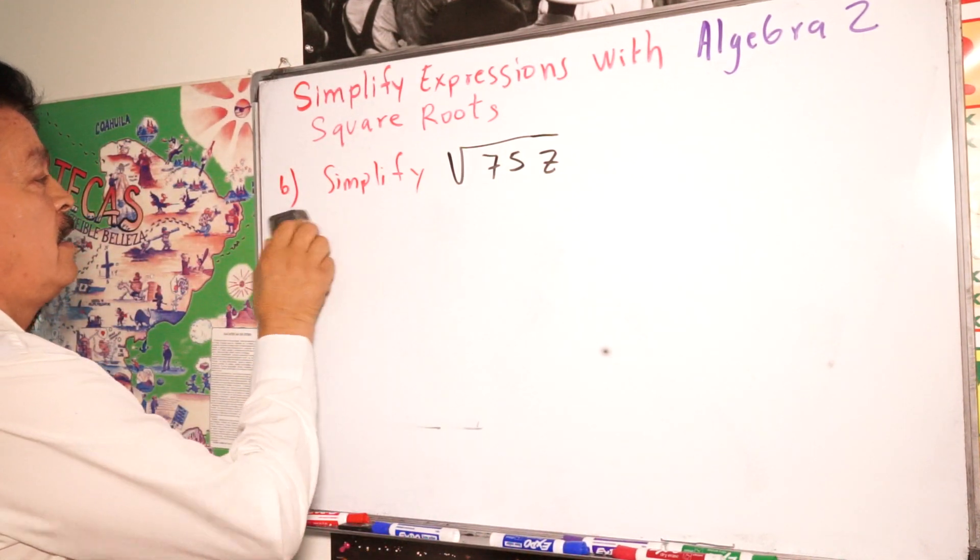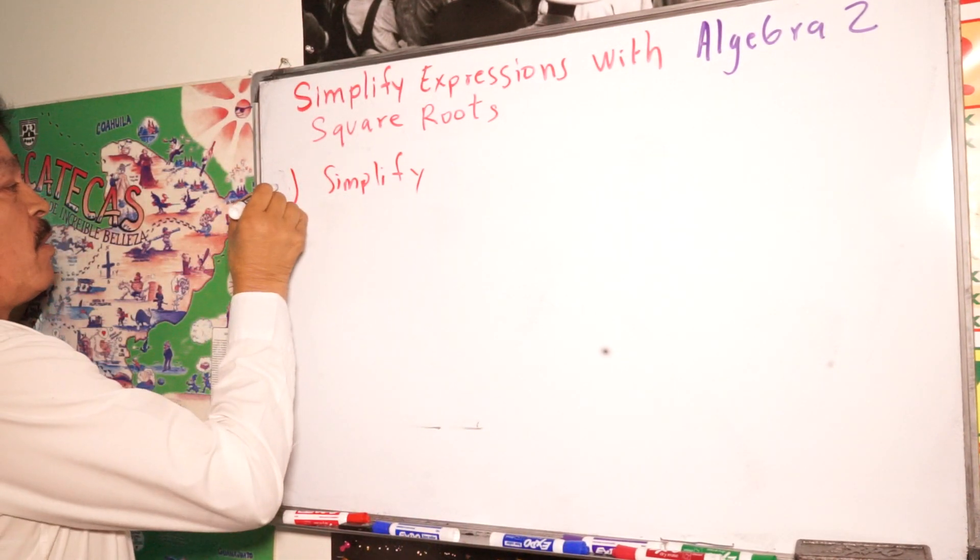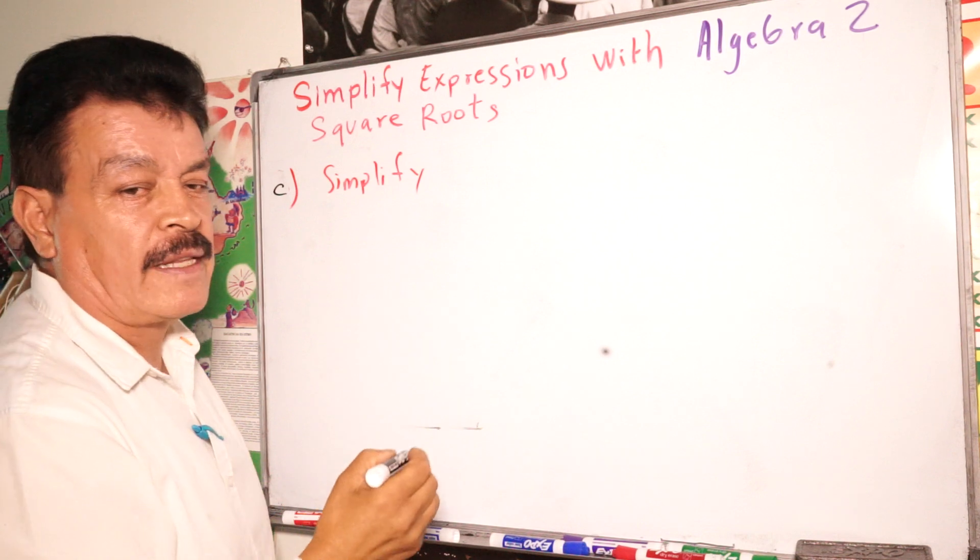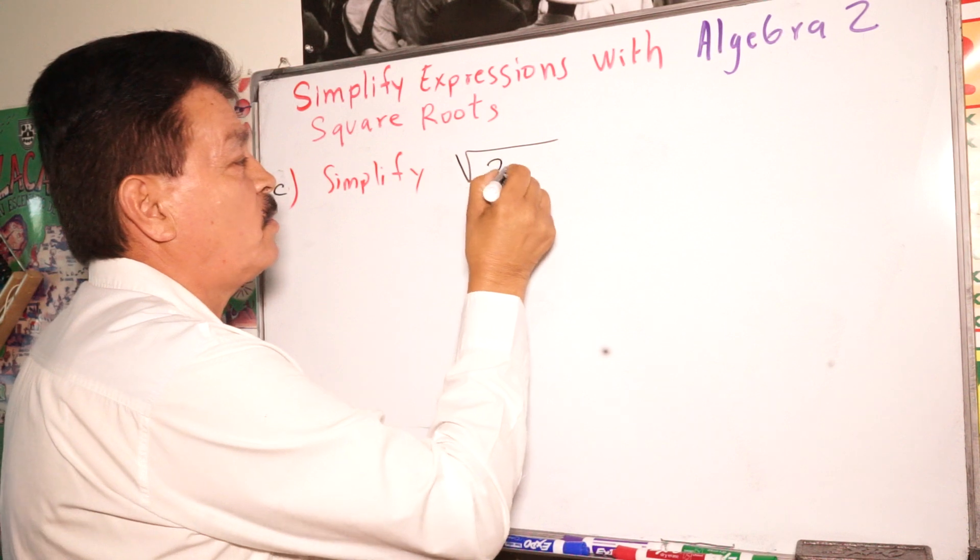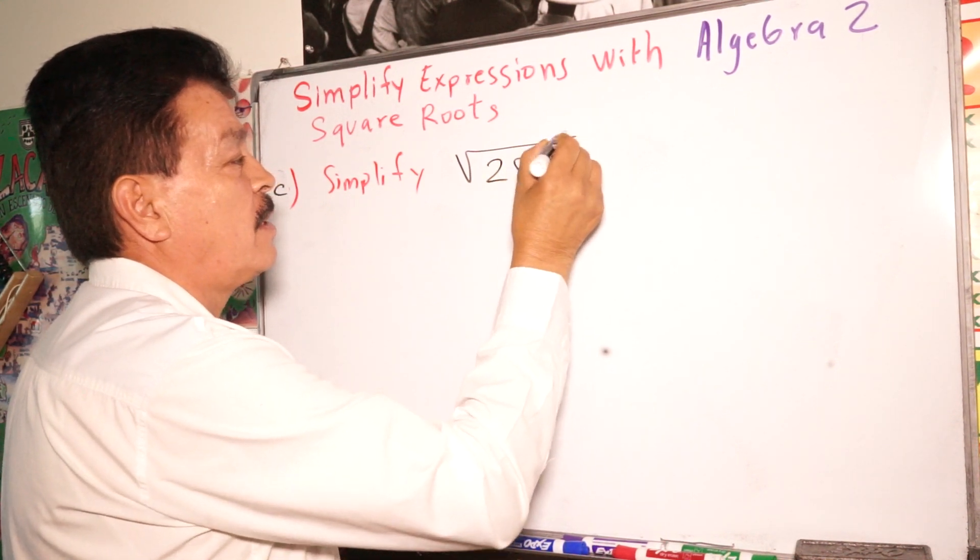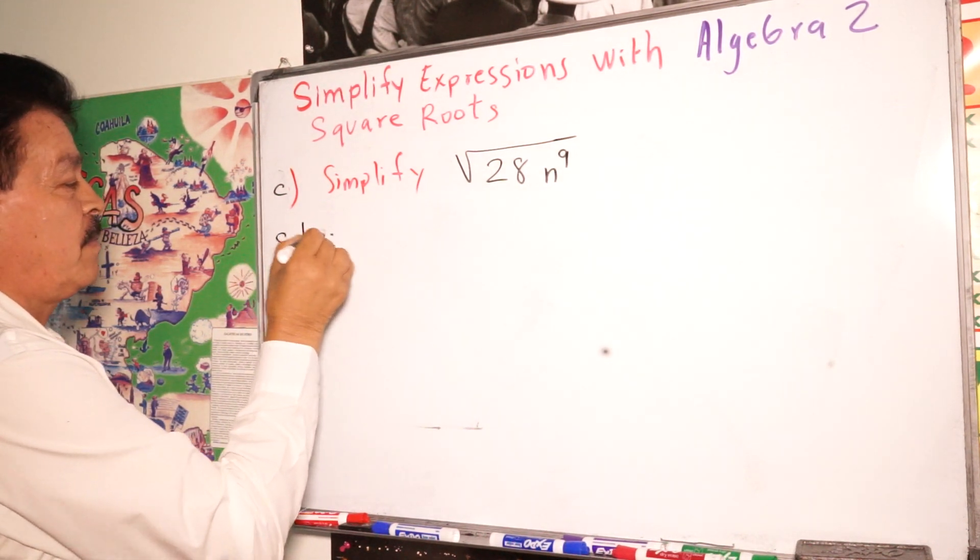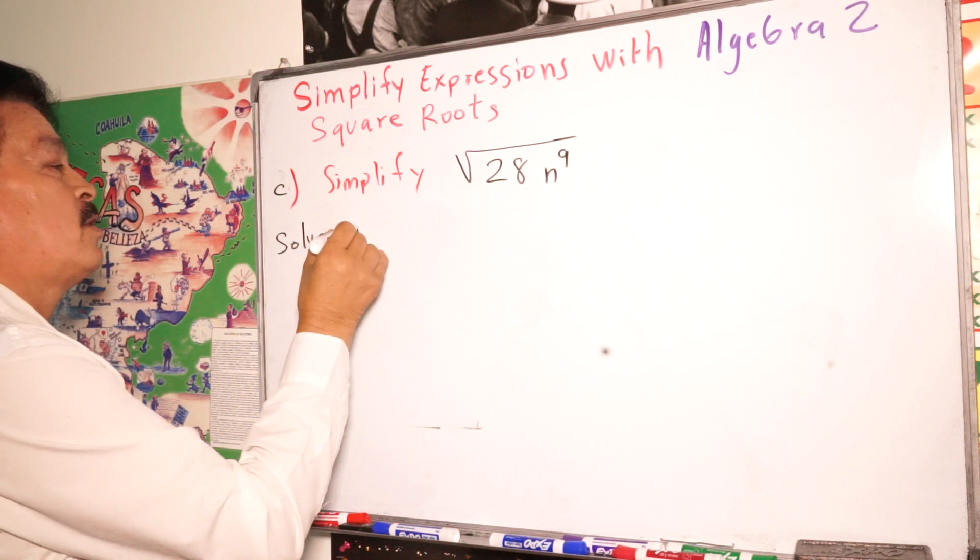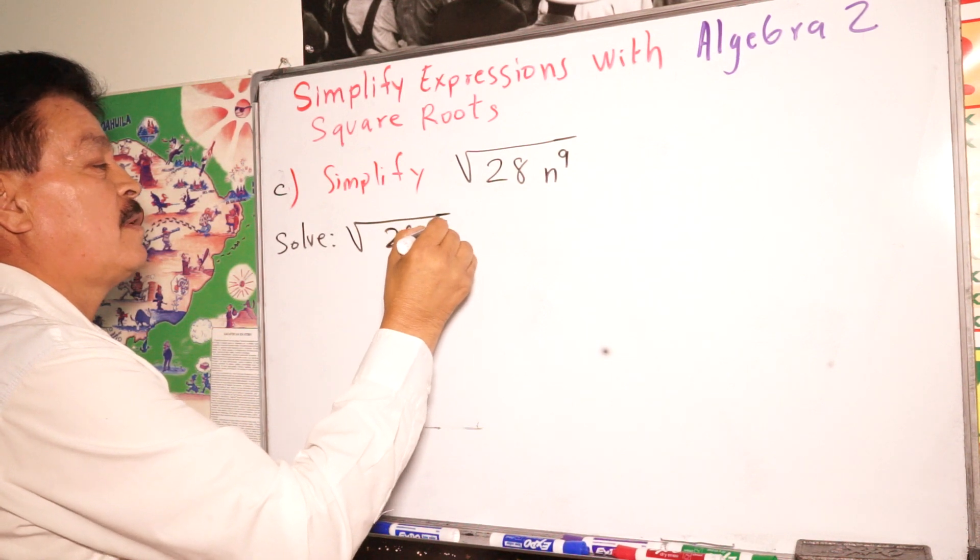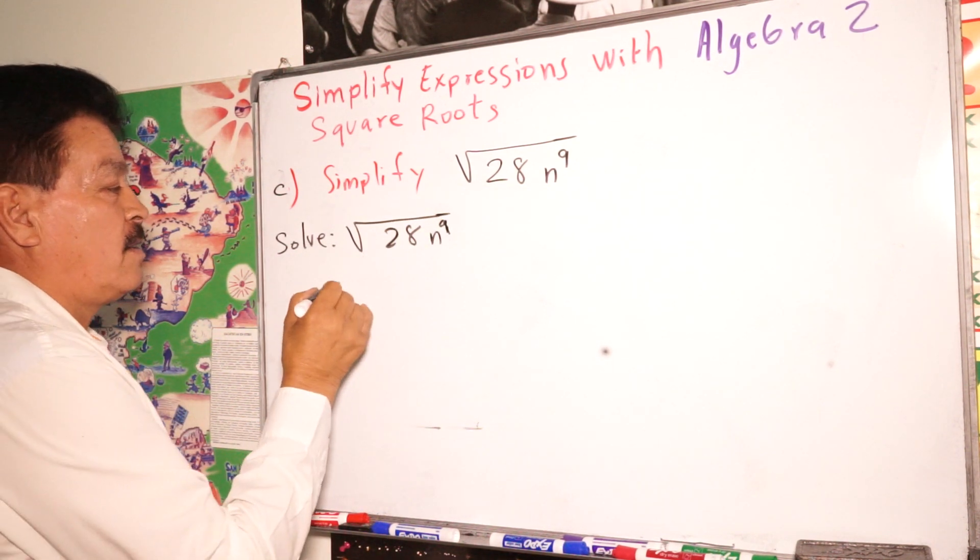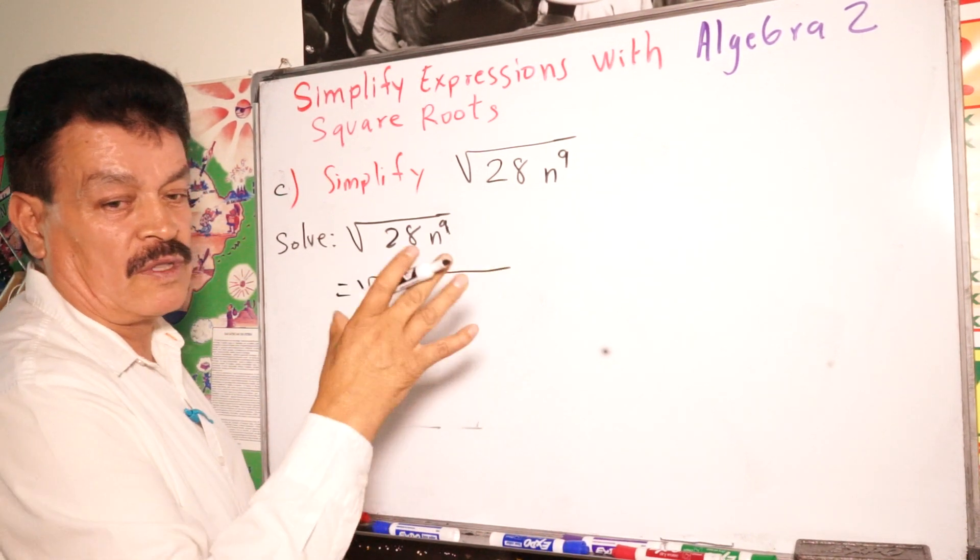Let me show you another problem. The third one, let's write square root of 28n to the 9th power. This is our problem. It's very simple. Square root 28n to the 9th power. So this is equals, first step, find the factors.